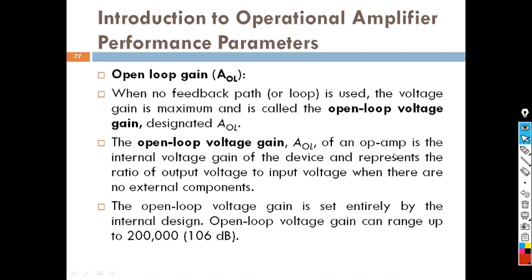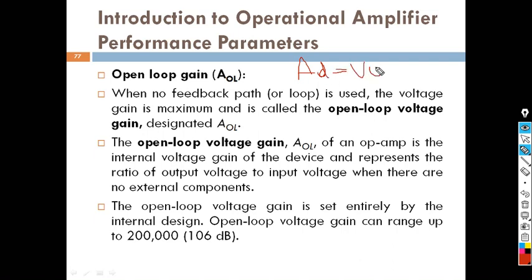Open loop gain is AD, which is the output voltage V0 divided by the differential input Vd. Vd is the difference in input voltage between the inverting and non-inverting terminals. Open loop gain is the gain when we don't connect anything from the output to the input as feedback.